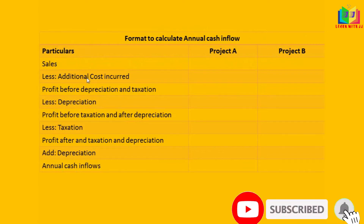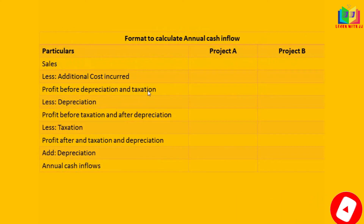To calculate cash inflow: take sales minus additional cost to get profit before depreciation and tax. Then subtract depreciation to get profit before taxation and after depreciation. Then subtract taxation to get profit after tax and after depreciation. Finally, add back the depreciation to find the annual cash inflow.